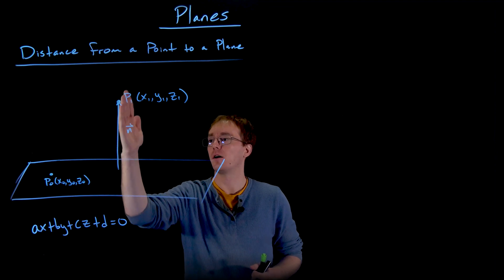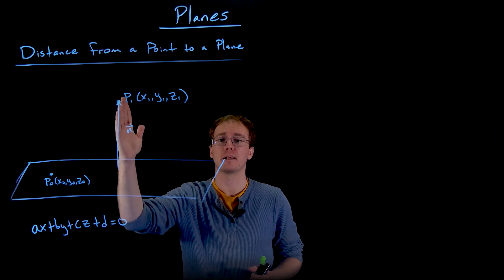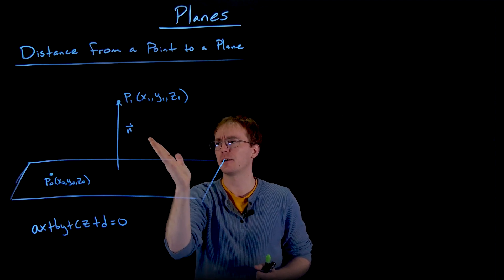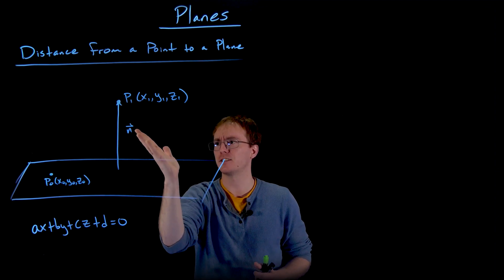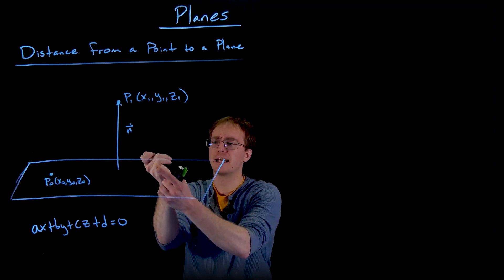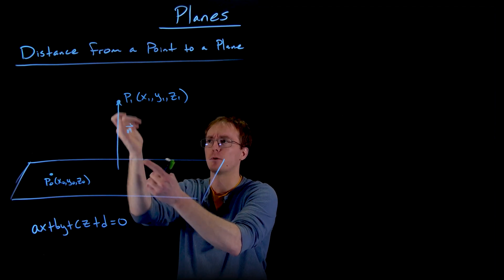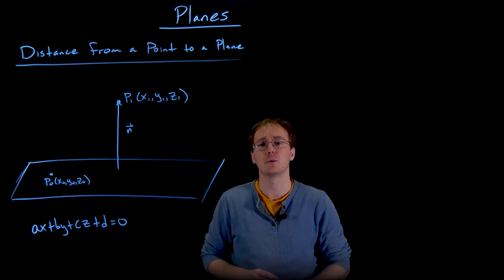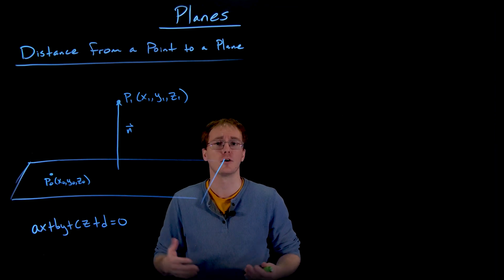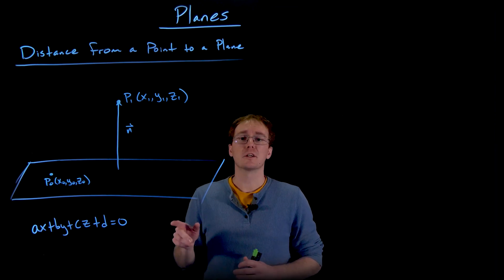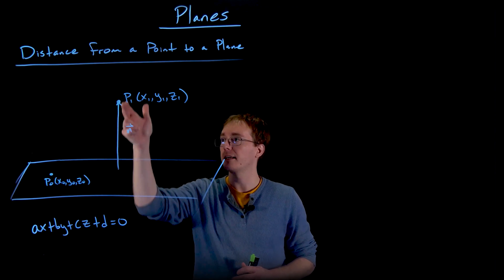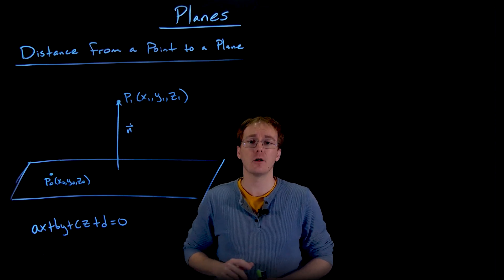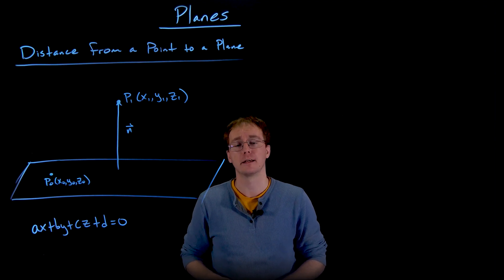Suppose we had a non-orthogonal line coming out of our plane that was describing the shortest distance from our point to our plane — that line would look something like this. We could clearly see in a picture like that that we could move to a different point that would shrink the length of that line, and therefore make the distance between our point and plane actually smaller than we originally supposed. So the shortest path from our point to our plane is going to be along the straight line that is parallel to the normal vector for our plane.